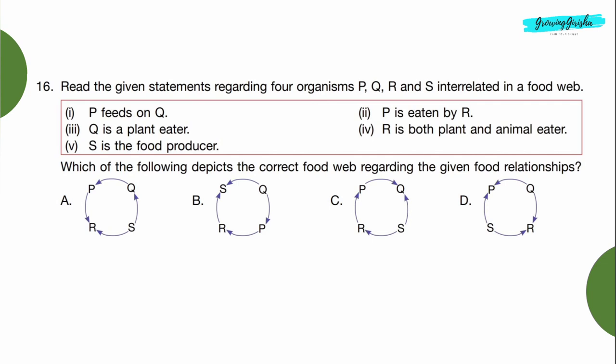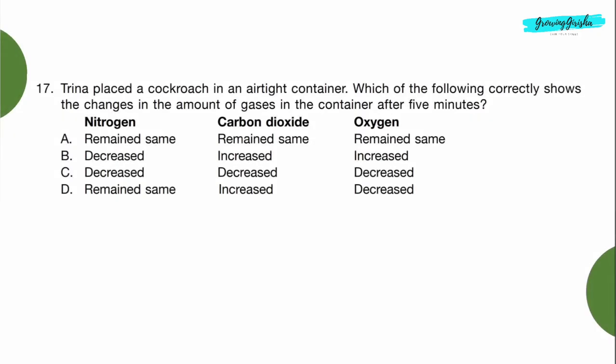Question 16: Read the given statements regarding four organisms P, Q, R, and S interrelated in a food web. P feeds on Q. P is eaten by R. Q is a plant eater. R is both plant and animal eater. S is the food producer. Which of the following depicts the correct food web regarding the given relationships? Option A. Question 17: Trina placed a cockroach in an airtight container. Which of the following correctly shows the changes in the amount of gases in the container after 5 minutes? Option D.